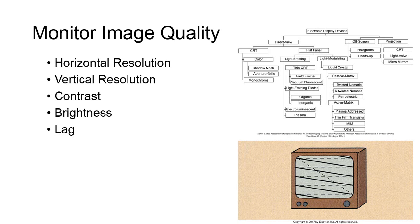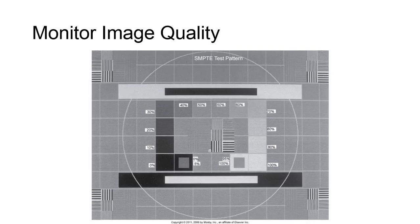Lag is what we refer to when there is a delay in the viewable image when the fluoroscope is moved to a new position. We define horizontal resolution as the ability to resolve dots on a line, which can also be referred to as bandwidth or bandpass. Vertical resolution is the ability to resolve horizontal lines as separate, and we measure this in line pairs per millimeter.